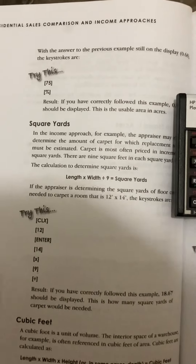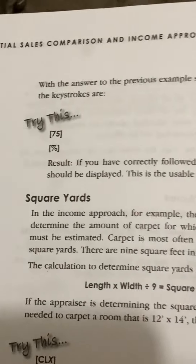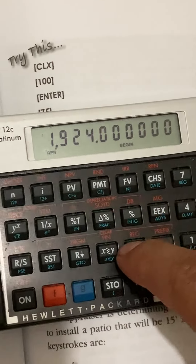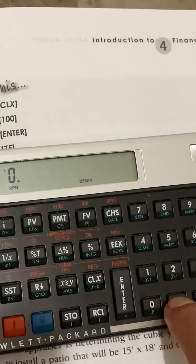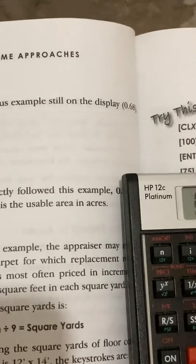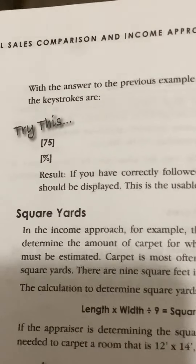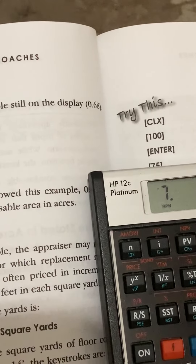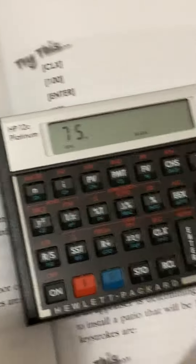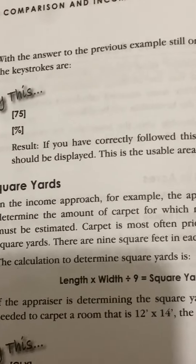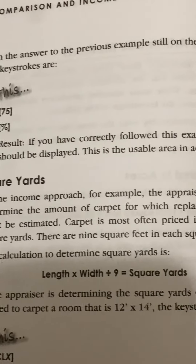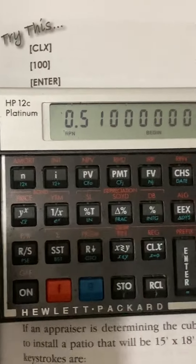Residential sales comparison and income approaches, page 118. With the answer to the previous example still on the display — 0.68 — let me clear this. Try this: press 75, now press the percent result. If you have correctly followed the example, 0.51 should be displayed. This is the usable area in acres.